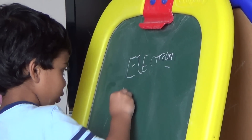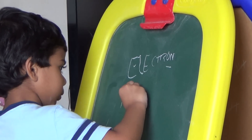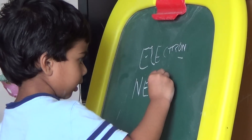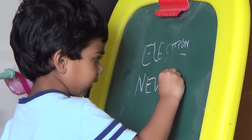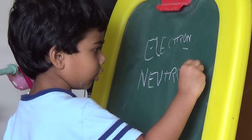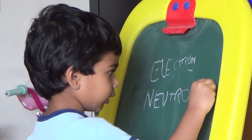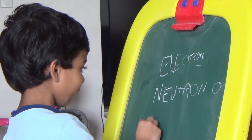And a neutron — it has no charge. Zero. That's funny.